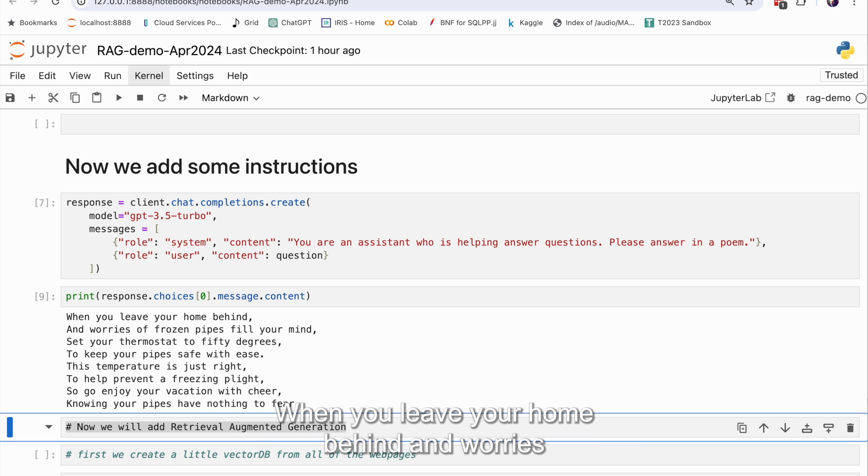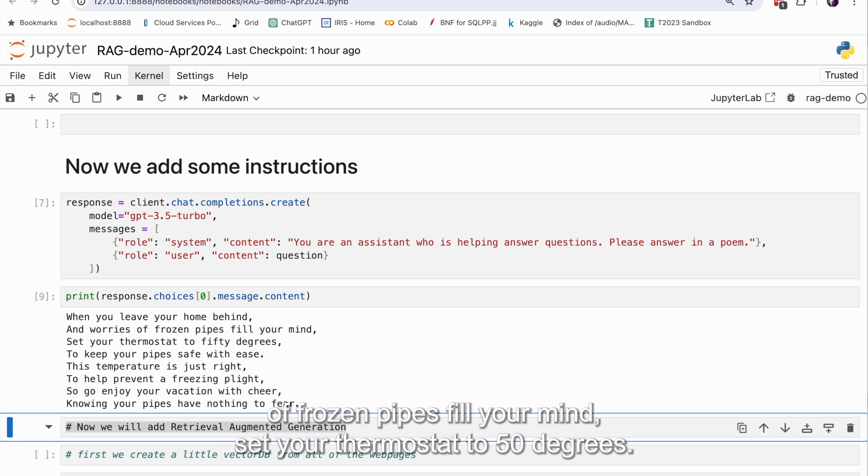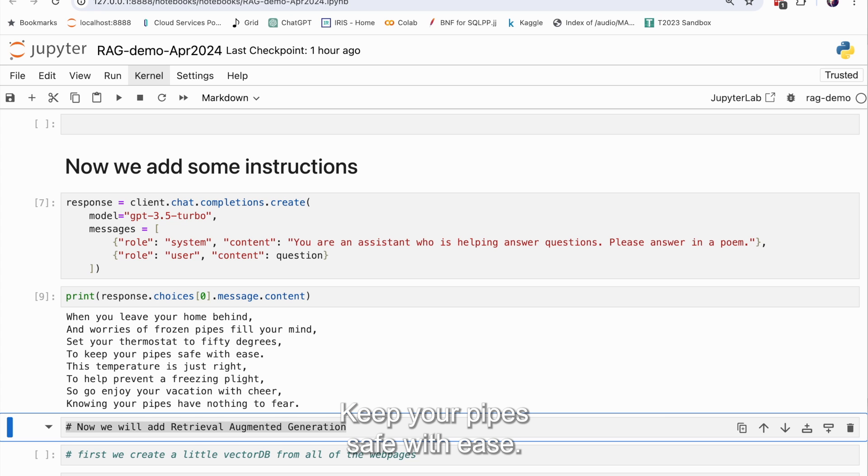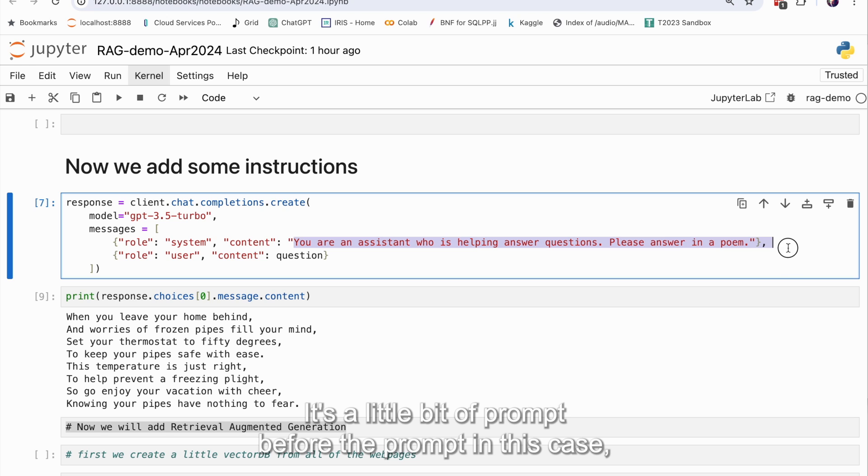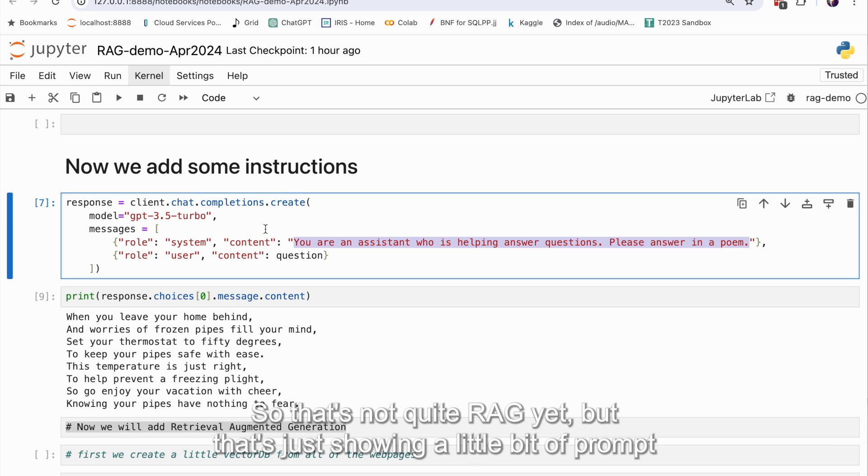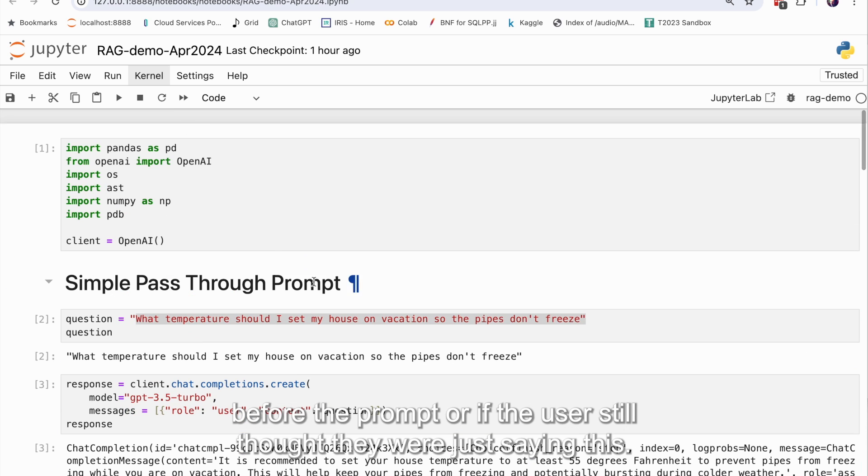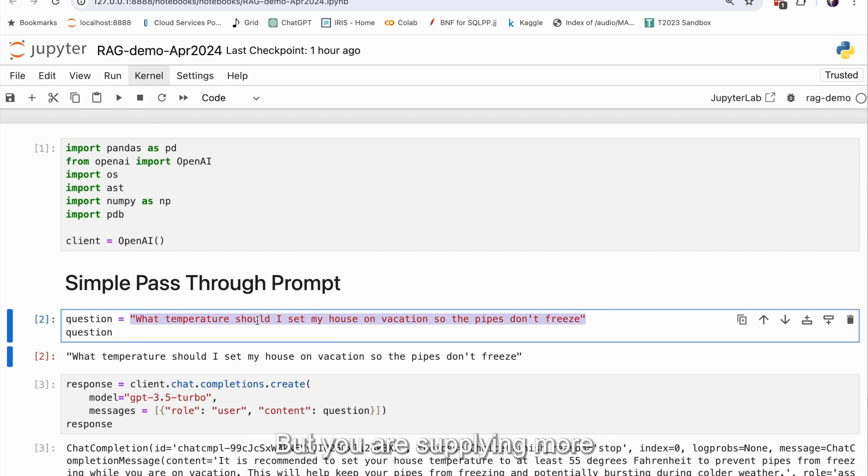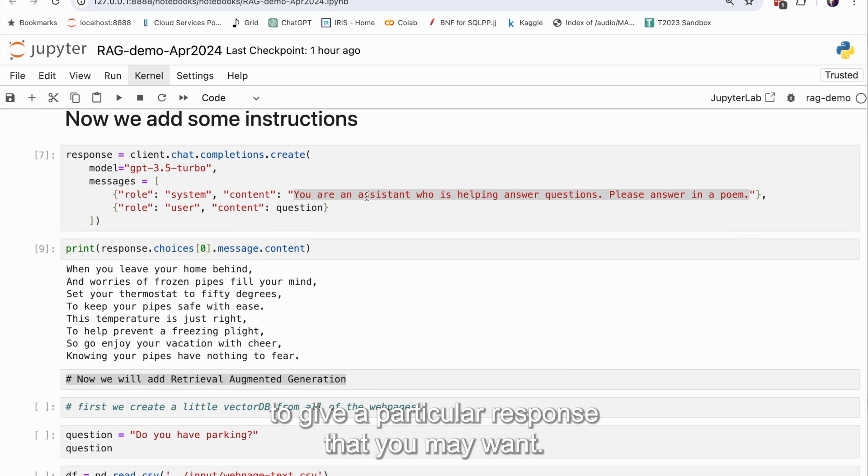When you leave your home behind and worries of frozen pipes fill your mind, set your thermostat to 50 degrees. Interesting, it gives a slightly different answer. Keep your pipes safe with ease. So you can see that you can give it commands. It's a little bitty prompt before the prompt in this case, and that will adjust the way it will answer your question. So that's not quite RAG yet, but that's just showing a little bit of prompt before the prompt work. The user still thought they were just saying this, but you are supplying more information in your code beyond what the user said to give a particular response that you may want.